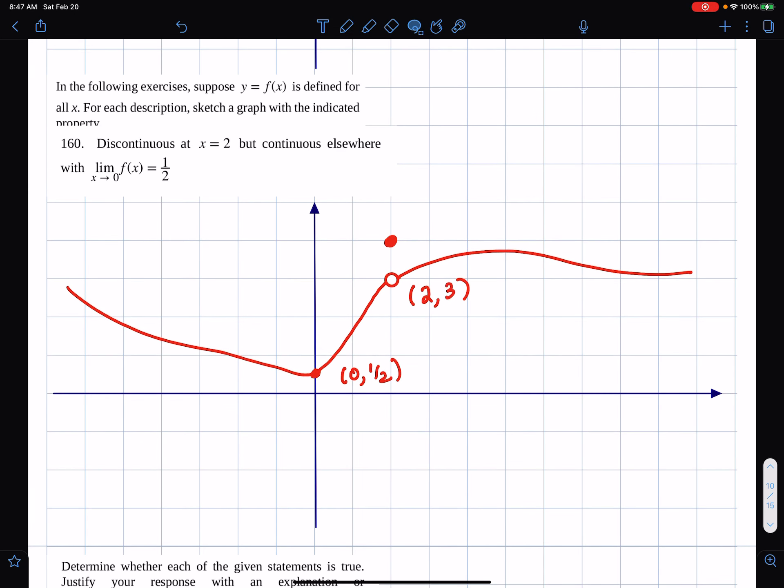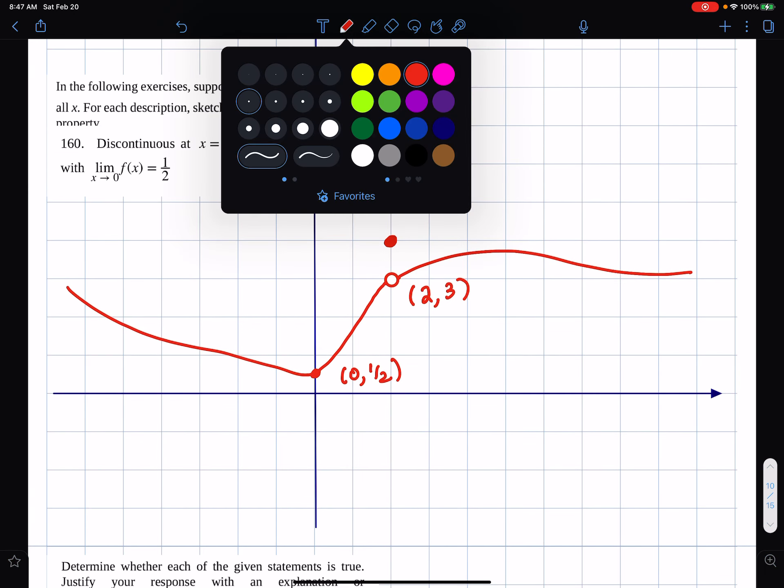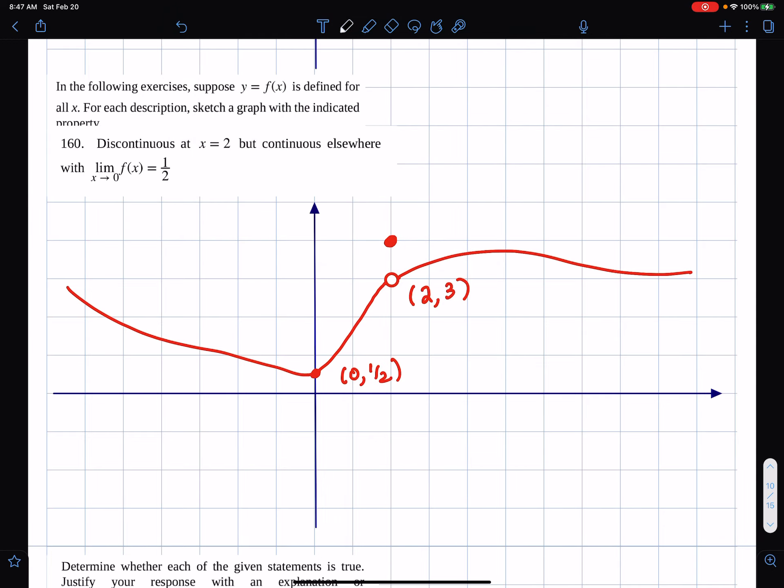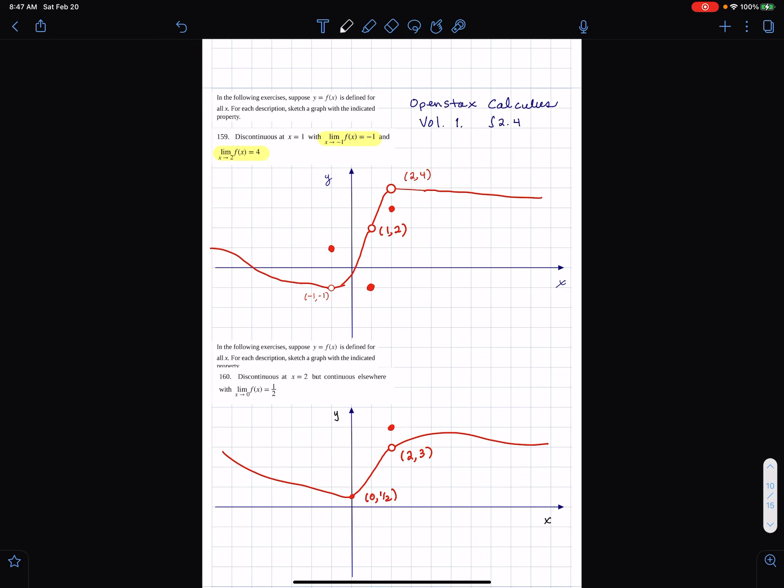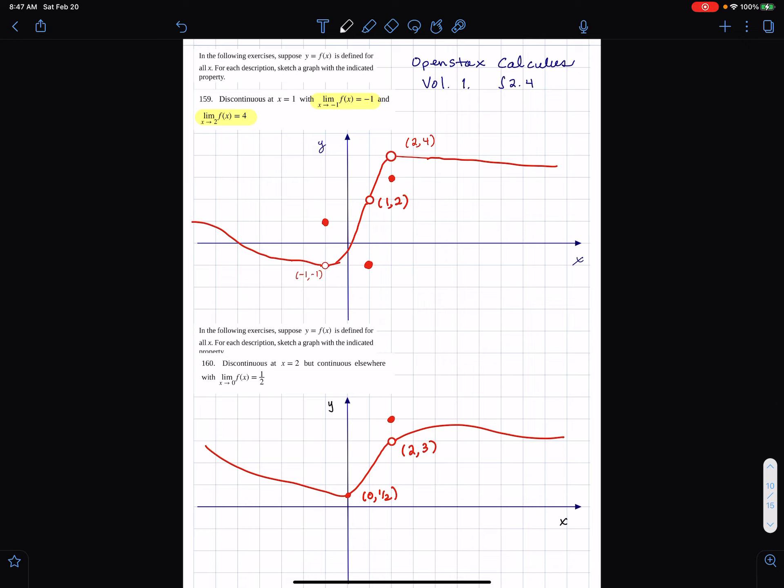So I guess I better label the axis, and then that'll finish this. So let me zoom out for both of those problems. Those are just examples. Your graph can look different. All right. So, that's all.